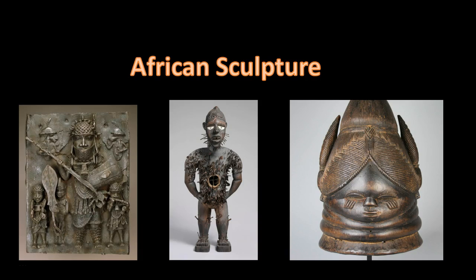Despite the numerous sculptural traditions in Africa, there are certain conventions. Usually sculptures are portable — larger sculptures, the kind that grace the plazas of ancient Egypt or Rome, are unknown. Wood is usually the favorite material for sculpture, and trees were honored and symbolically repaid for branches taken from them. Ivory is used as a sign of rank or prestige, and metal shows strength and durability and is restricted to royalty.